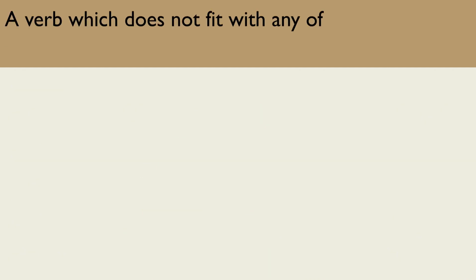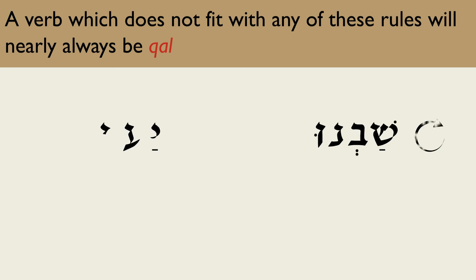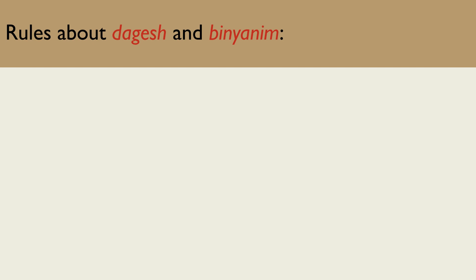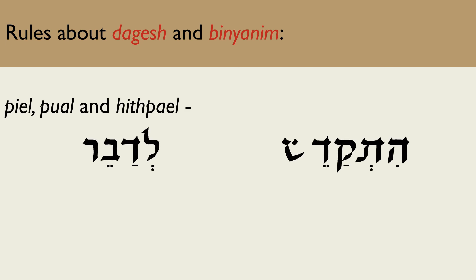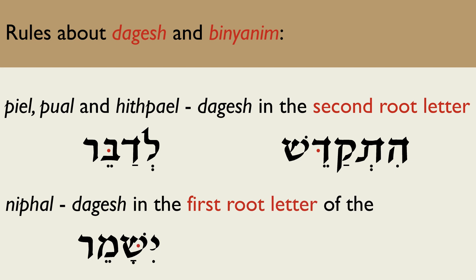A verb which does not fit with any of these rules will nearly always be Kal. Three examples are Shavnu (we returned), Ya'amdu (they will stand), and Eilech (I will go). You should also know these rules about strong Dagesh and Binyanim: Pi'el, Pu'al, and Hispa'el have a Dagesh in their second root letter, which is characteristic of these Binyanim. Nifal has a Dagesh in the first root letter of the imperfect pattern to compensate for the missing prefix Nun of the Nifal.